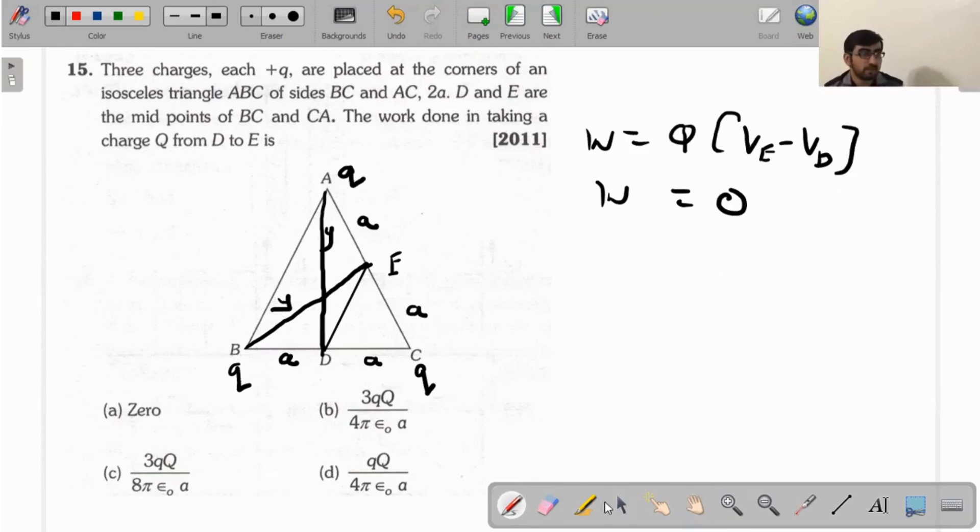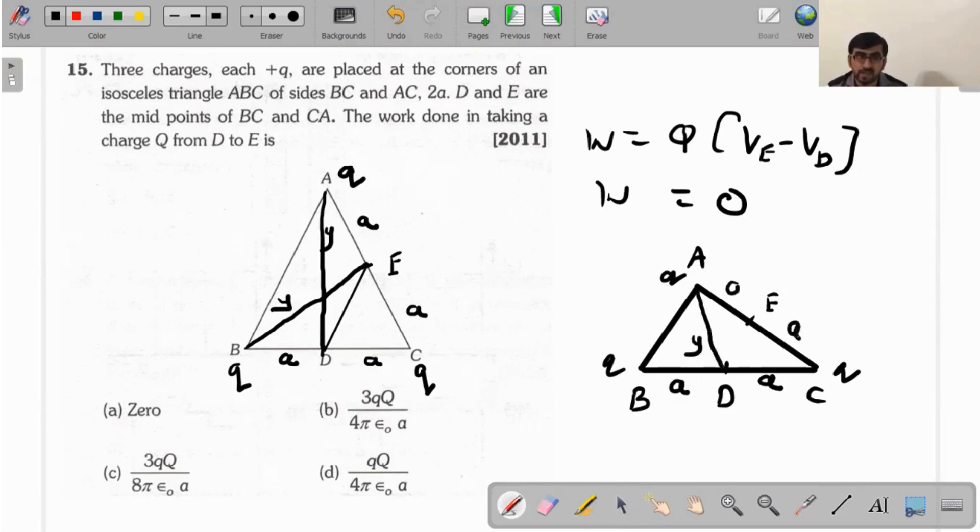The thing is, side AC and side BC are the same. At distance a there's Q, at distance y there's Q - potential depends on the distance. So D and E are both equal potential points, and work done is final potential minus initial potential, which equals zero.